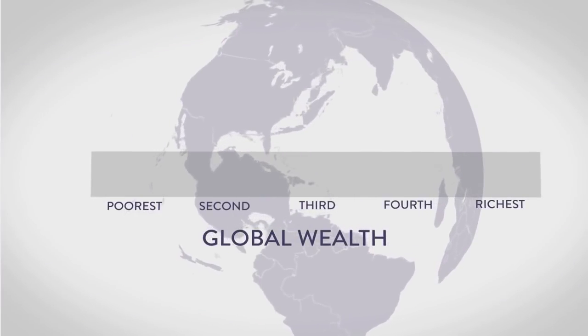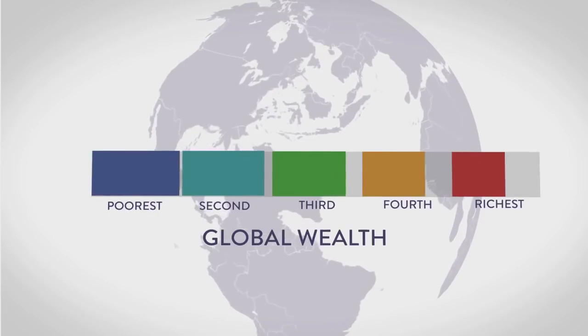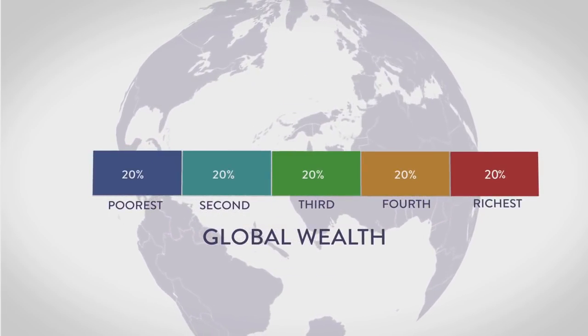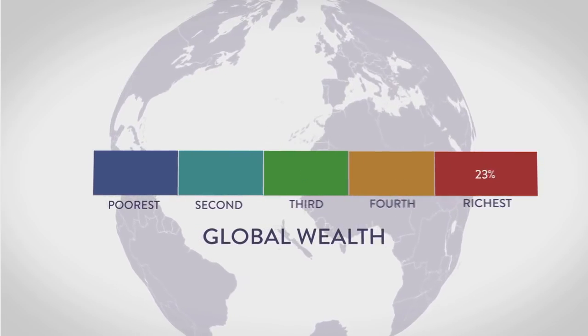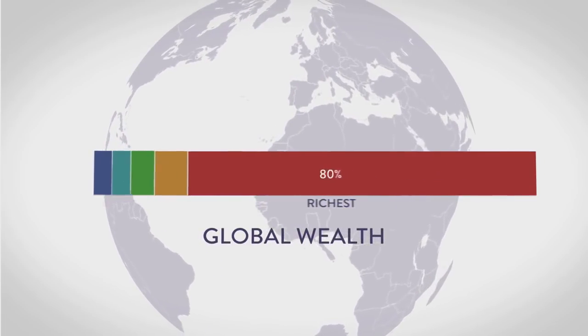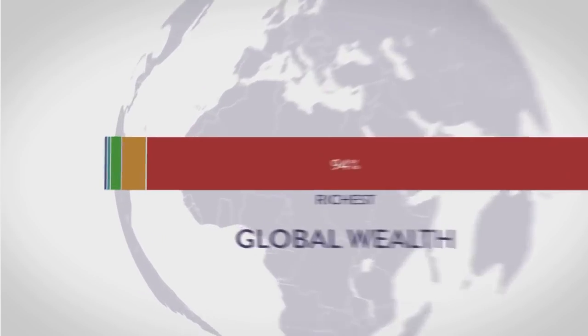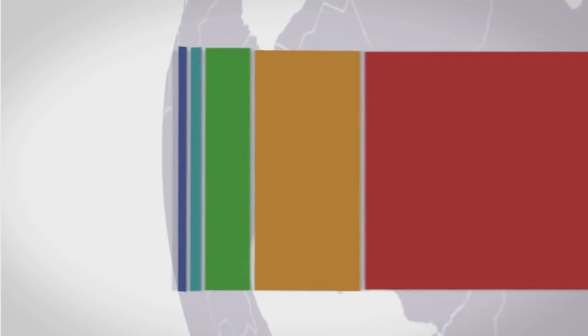Let's start with this graph. A perfectly even distribution of wealth among all living people, with everyone divided into 5 equal groups. Now, let's show how much each group actually has. Shocking, right? 80% of the world's people barely have any wealth. It's hard to even see them on the charts.